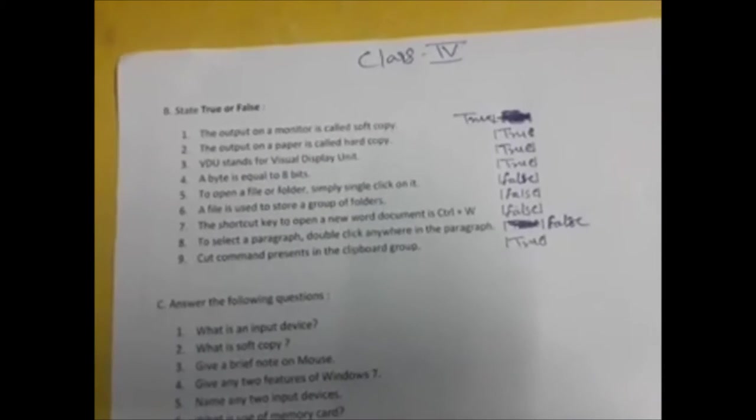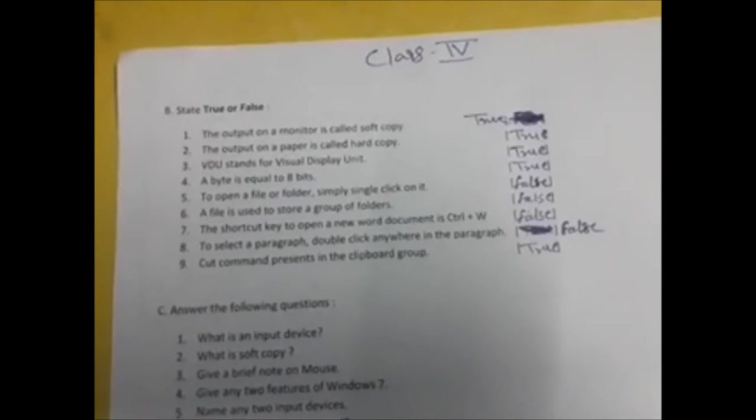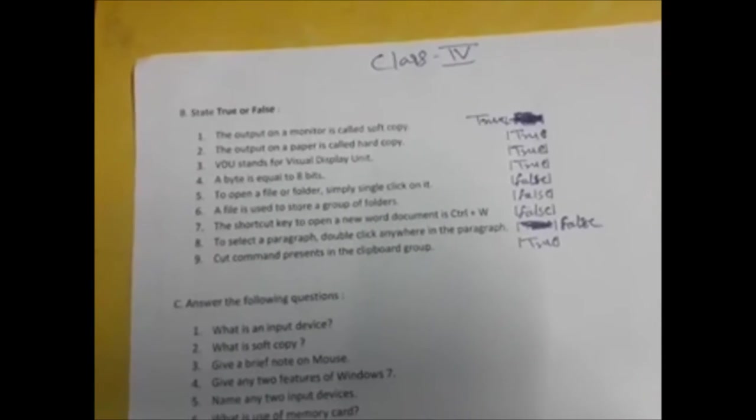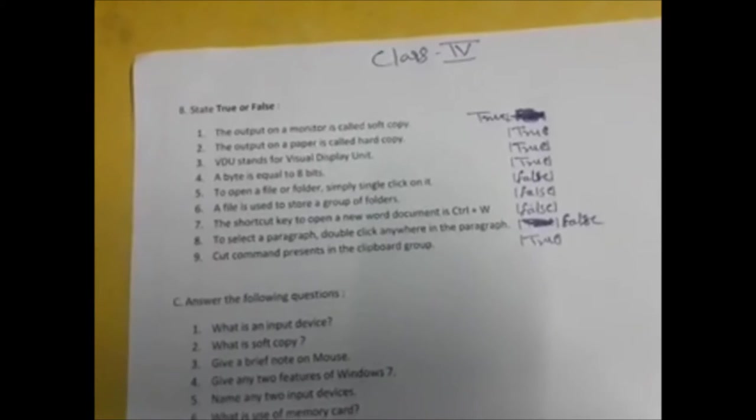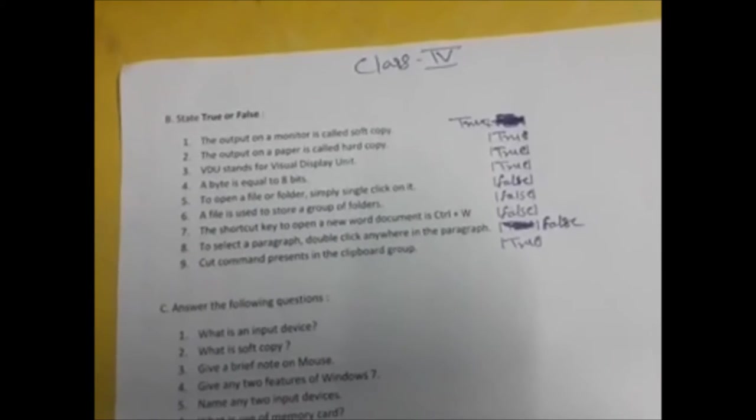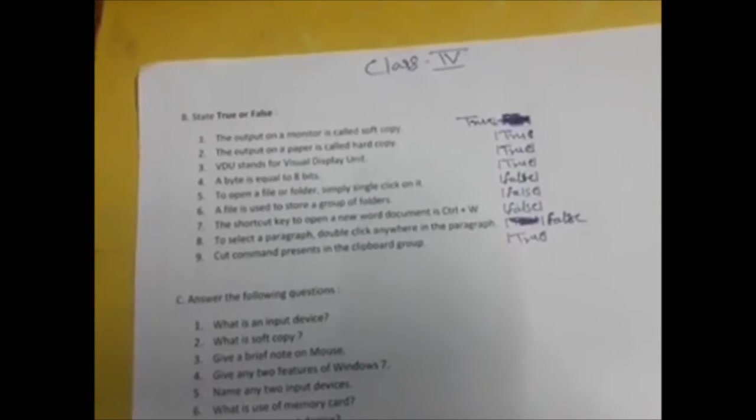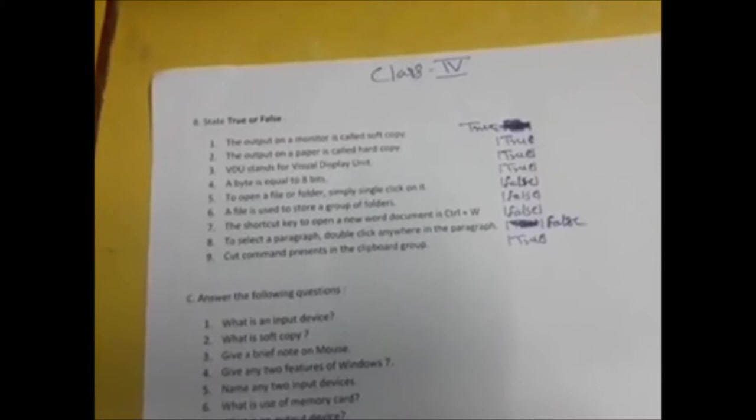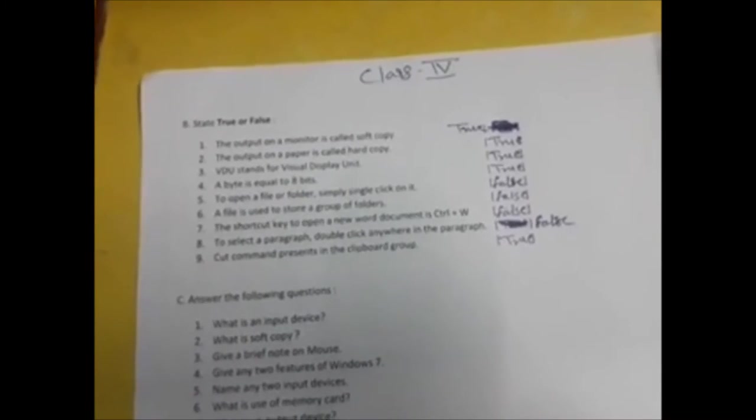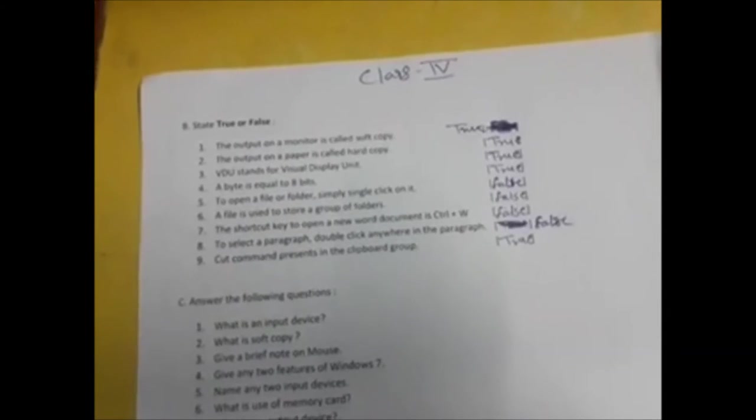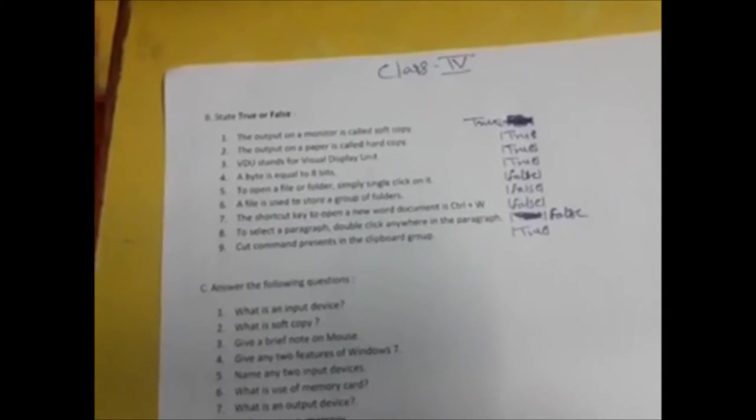Next, the shortcut key to open a new Word document is Control plus W. It is false. Control plus W is used to close the document, not to open a new document. Next is to select a paragraph, double click anywhere in the paragraph. No, we have to triple click on the paragraph if you want to select the whole paragraph. So this is false. Next is cut command presented in the clipboard group. Yes, this is true, cut command is present in the clipboard group.